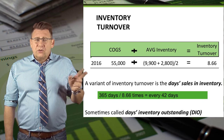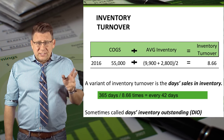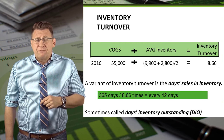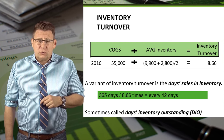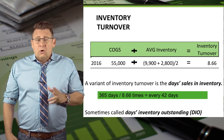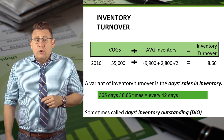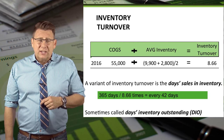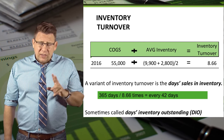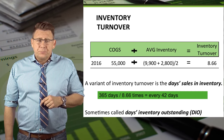Here the result tells us this company takes about 42 days to sell through its inventory, or has about 42 days of inventory on hand. You can think of that number either way.